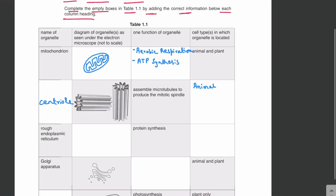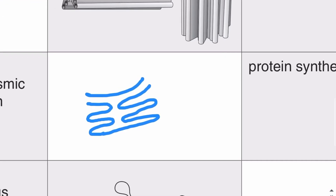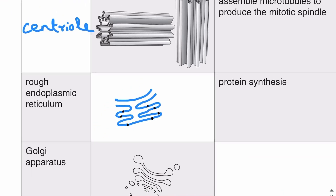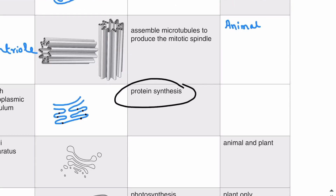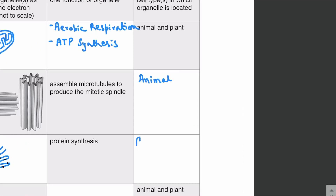Now we have to draw the rough endoplasmic reticulum. The rough ER is a continuation of the outer membrane of the nucleus. Because it is rough ER, ribosomes must be attached to its surface — ribosomes are very small compared to the rough ER itself. The function of the rough endoplasmic reticulum is protein synthesis. The rough ER is found in both animal and plant cells.